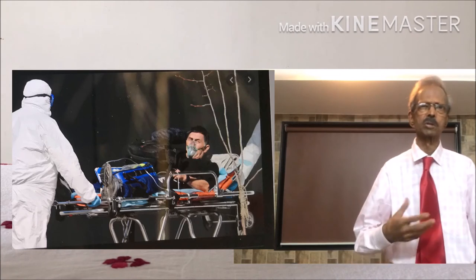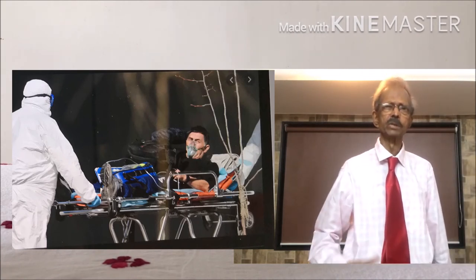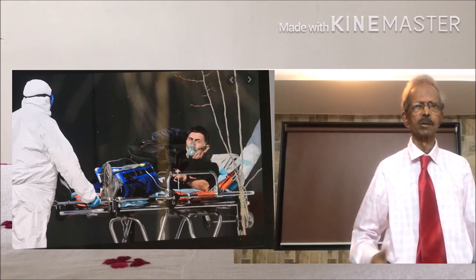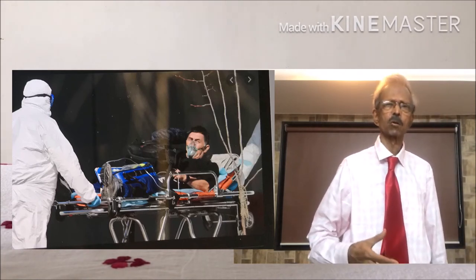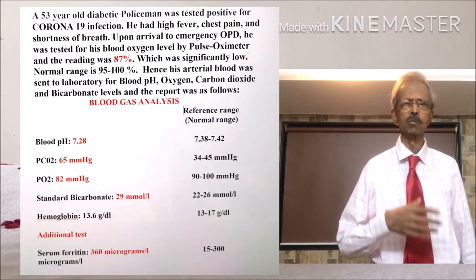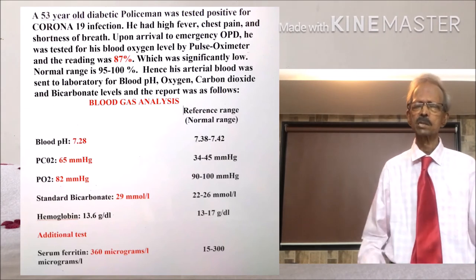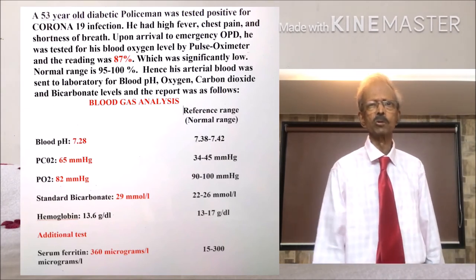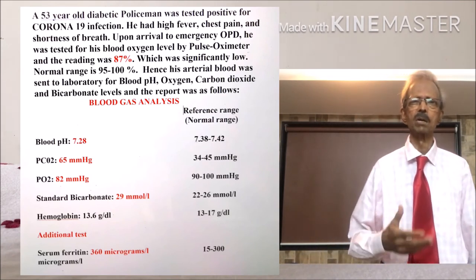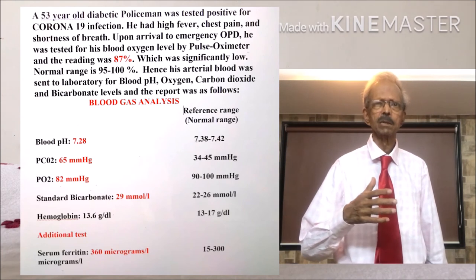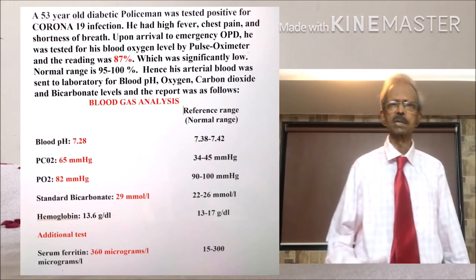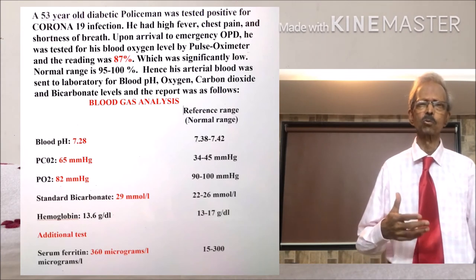Here is a report of a 53-year-old diabetic policeman who tested positive for coronavirus infection. He had high fever, chest pain, and shortness of breath. Upon arrival at the emergency OPD, he was tested for blood oxygen level by pulse oximeter and the reading was 87%, which was significantly low since the normal range is 95 to 100%. Hence, his arterial blood was sent to the clinical laboratory for determination of blood pH, oxygen, carbon dioxide, and bicarbonate levels, as shown in the report on the left.